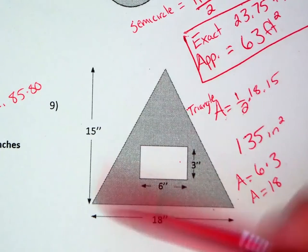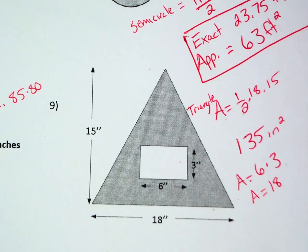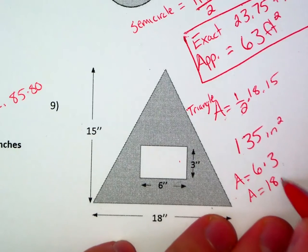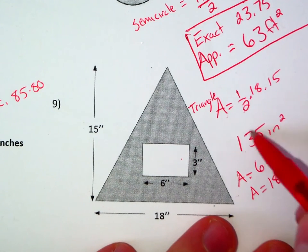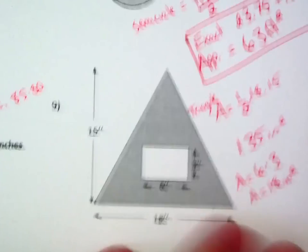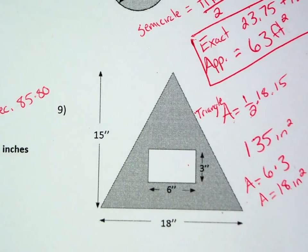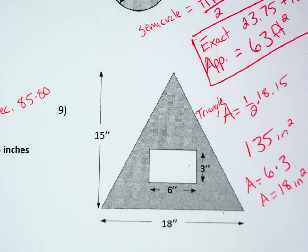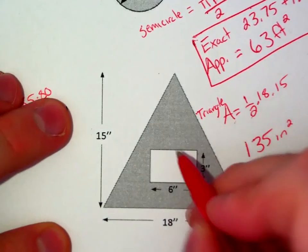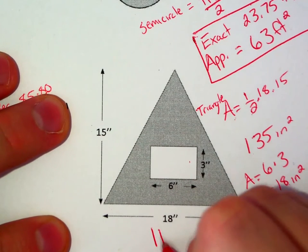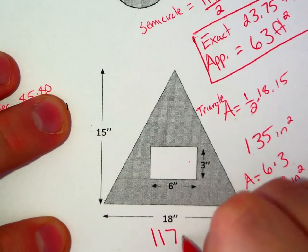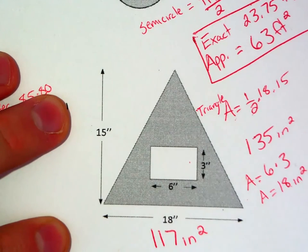Now since I have a whole shape that has an area of 135 inches squared and a rectangle with an area of 18 inches squared, I simply subtract the 18 inches squared from the 135 to determine that the shaded section of my triangle is 117 inches squared.